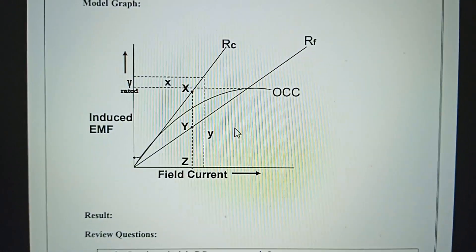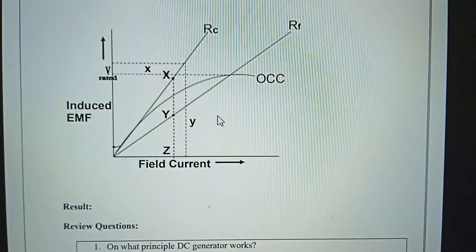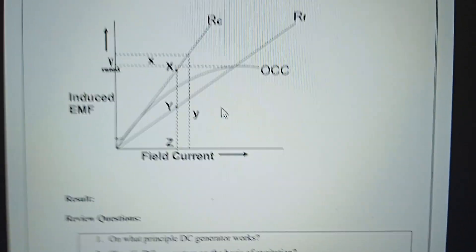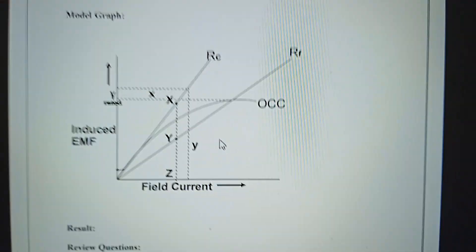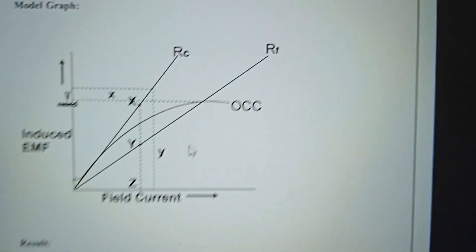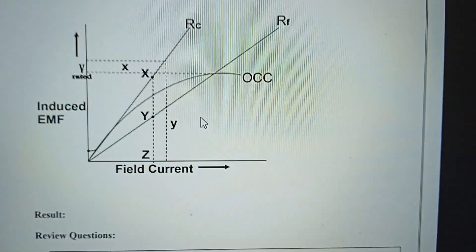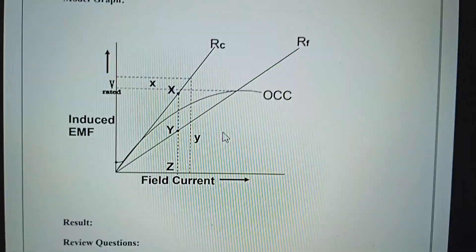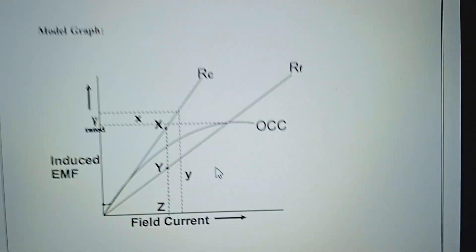But the critical resistance is the minimum resistance at which voltage is built up. The critical resistance is built up with Rf resistance. The rated voltage is built up with Rf resistance.